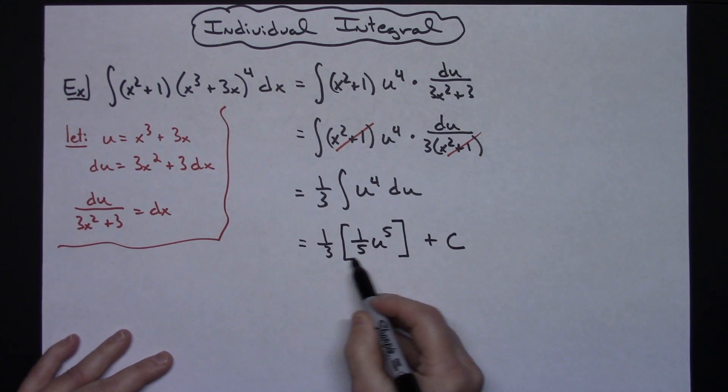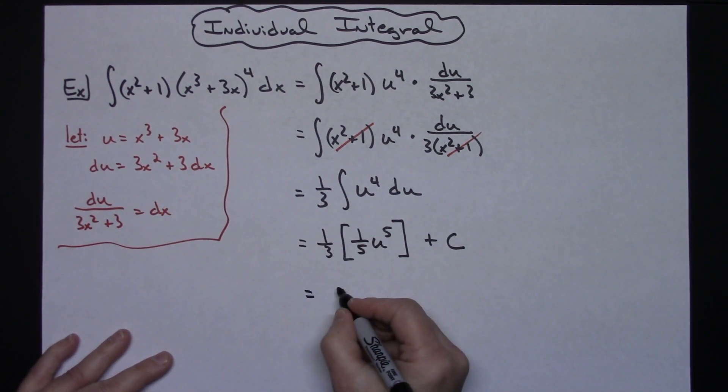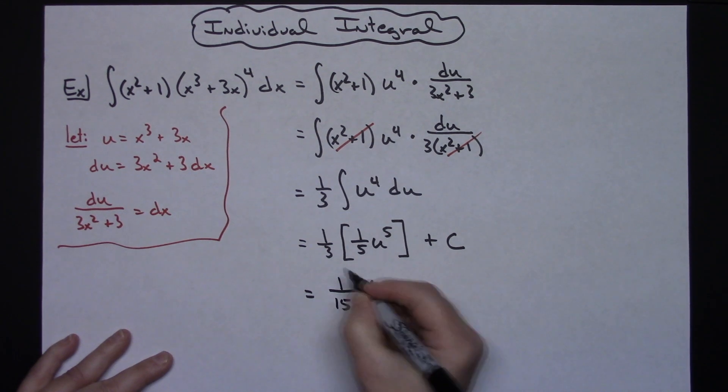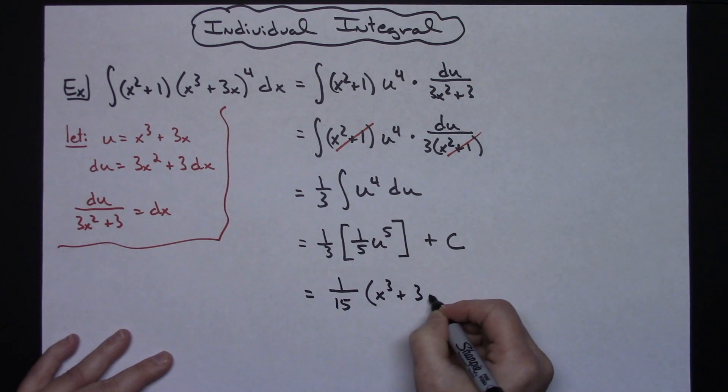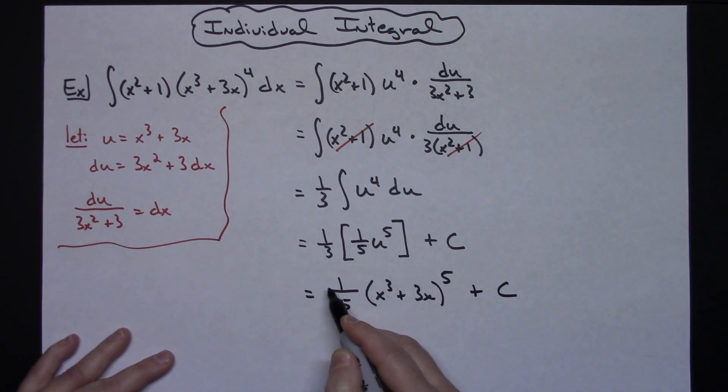I'm going to go ahead and multiply the 1 third and the 1 fifth and replace u all at the same time. So I'll have 1 over 15 times, replacing the u, x to the third plus 3x raised to the fifth, and then plus C.